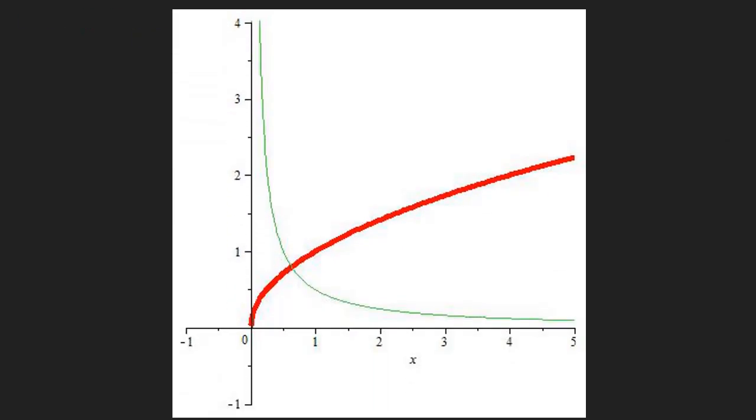Here is a graph of the function, the square root of x, and its derivative. So this is the square root of x here. And in green, we have its derivative, one over two times the square root of x.